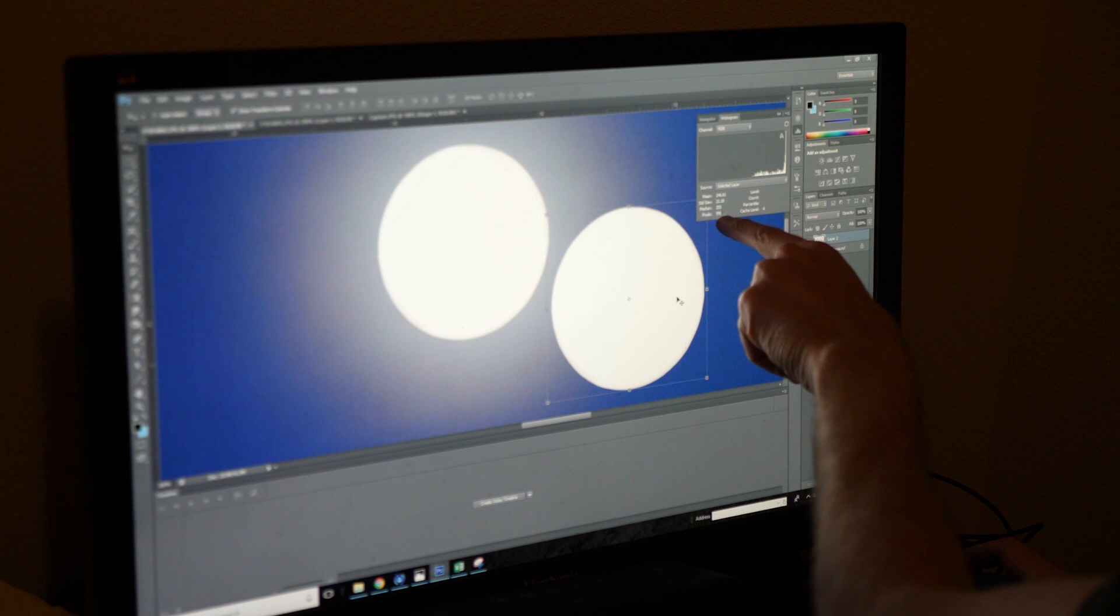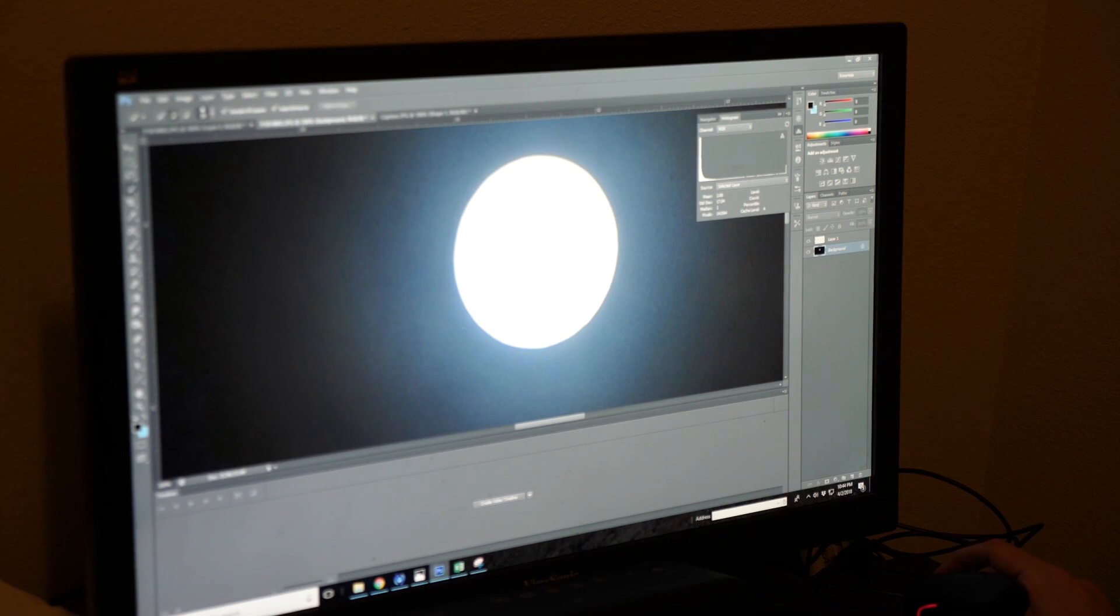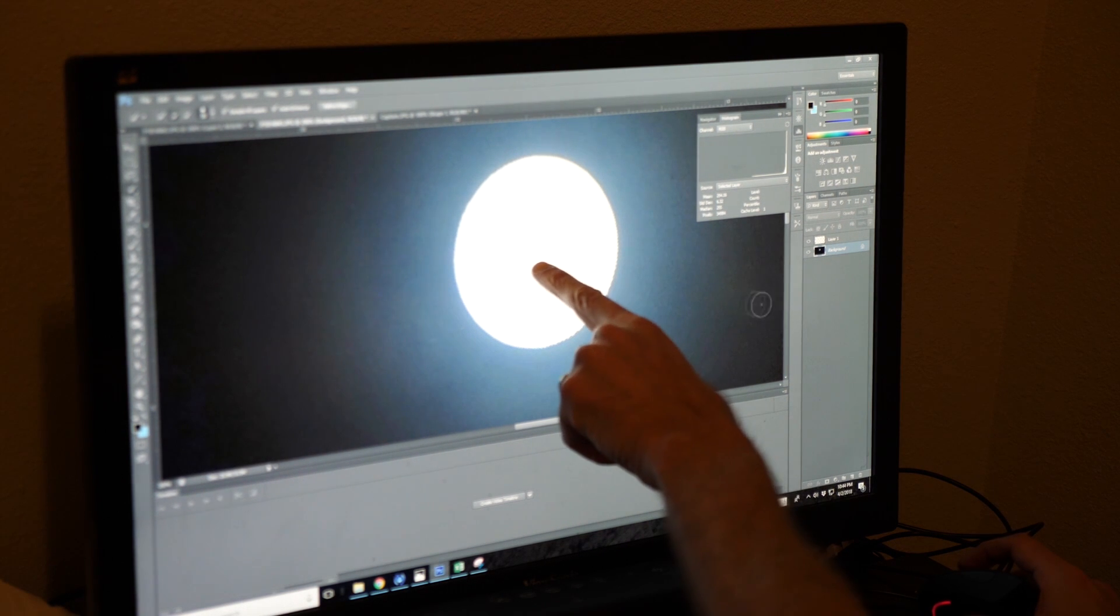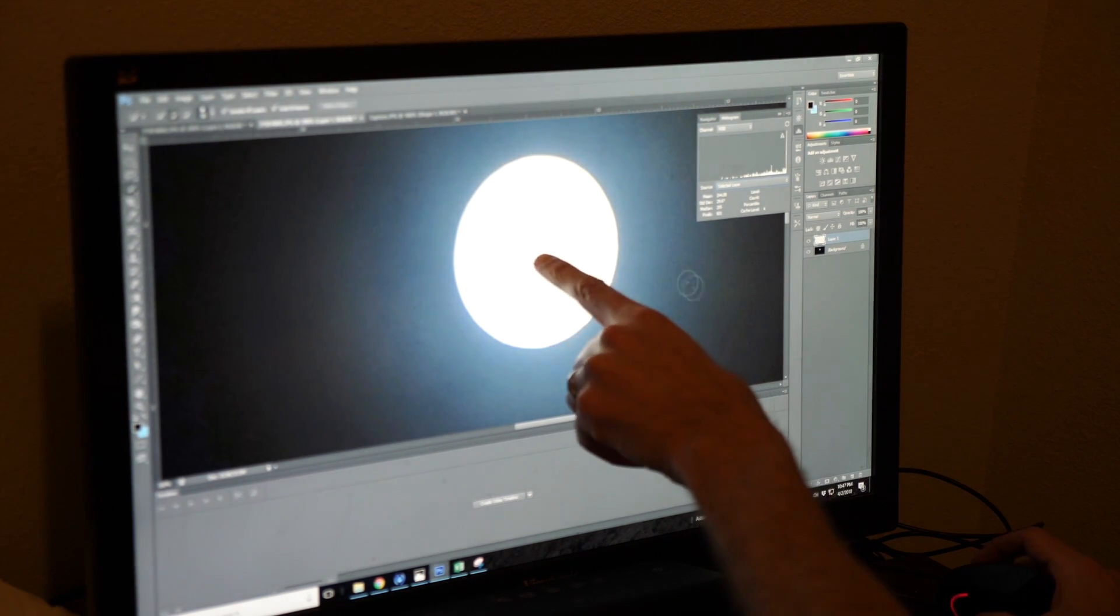So here's the moon selection and it counts 595 pixels in the moon here. And then when I do that same thing for the second moon picture I get 601 pixels for the moon in this image.